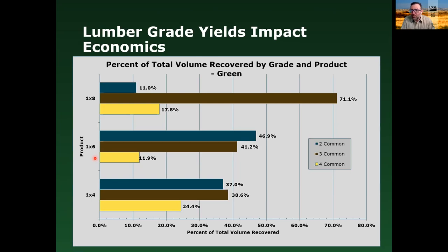What comes out of these ponderosa pine trees is typically a lot of three common grade. Your profitability margins are very tight with sawing, processing, and drying the small diameter ponderosa pine. When you dry it, you add value to it — but if you come out with a lot of drying defects, you can actually have a lot of degrades down to four common, losing a lot of your profit. That's why you always want to engage in appropriate kiln drying and not have any more than a 5% degrade in your grade recovery.